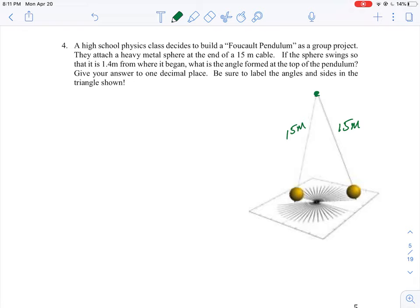And what it says is when the sphere swings, it's 1.4 meters from where it begins. So if you think what it's doing here, it's connecting - put two dots and mark that in as 1.4 meters.